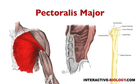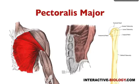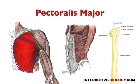Pectoralis major is the first of the four pectoral muscles that we spoke about, and we're going to look at the structure of that muscle, which you can see outlined in red. It's a fairly large muscle, relatively speaking, and you'll notice that it has a clavicular portion or clavicular head, and then another portion called the sternocostal portion. The clavicular portion is shown in green and the sternocostal portion in blue.